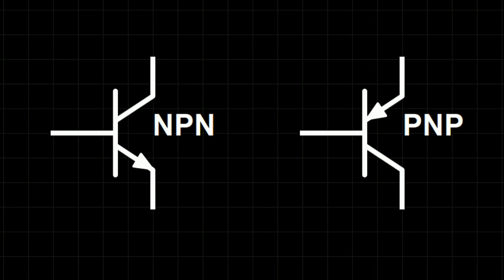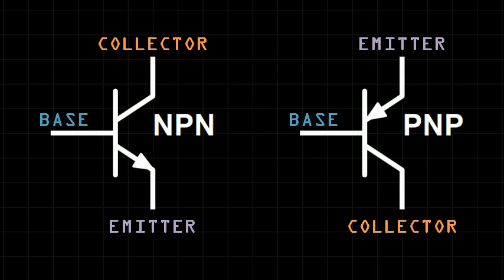PNP transistors are similar to NPN transistors, with both having a base, collector, and emitter pin. In both cases, a current through the base of the transistor changes its ability to conduct electricity, though the direction of the current depends on the type of transistor used.